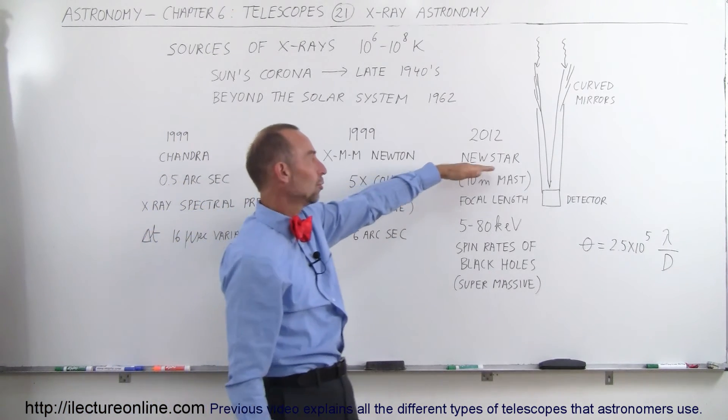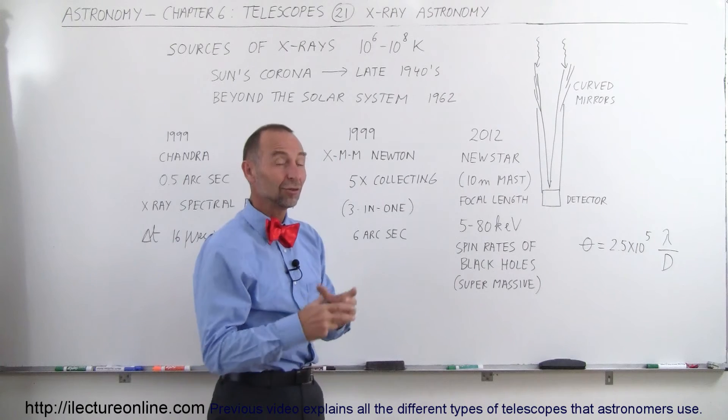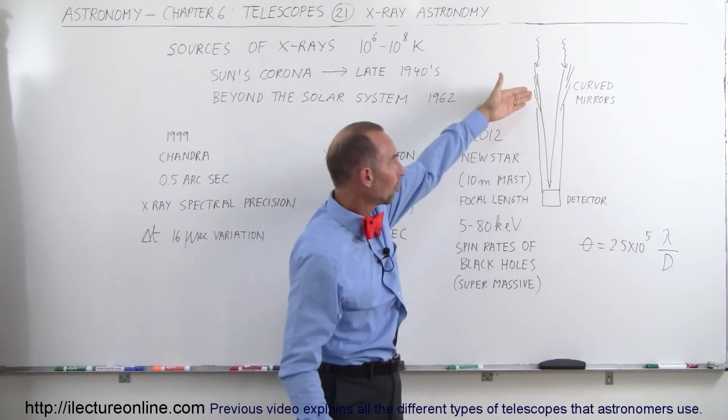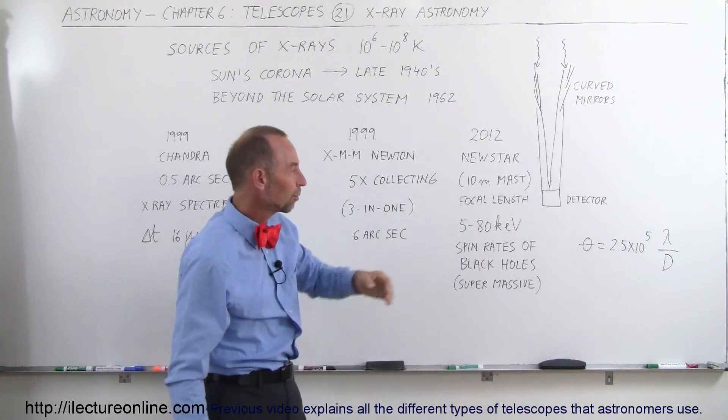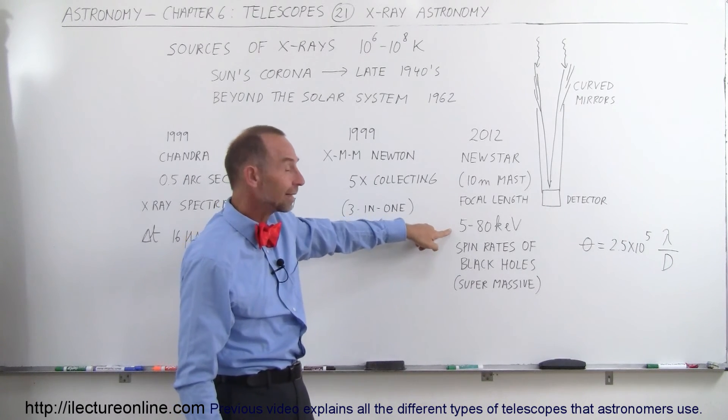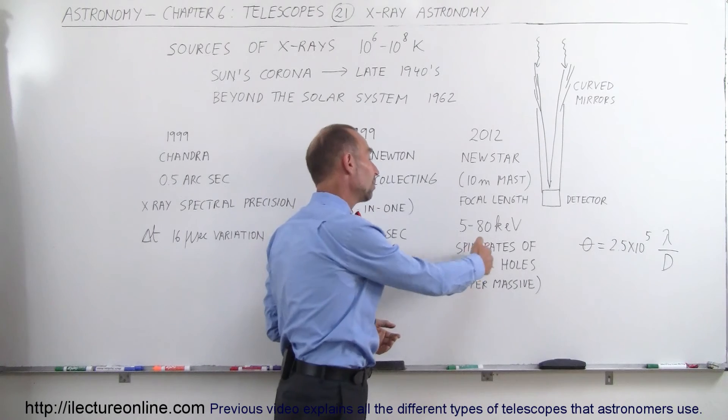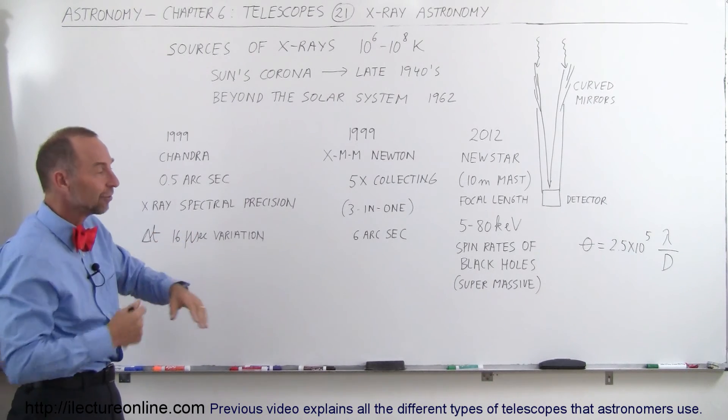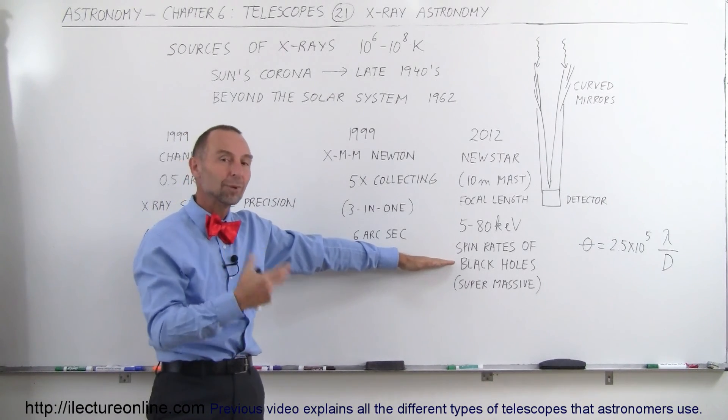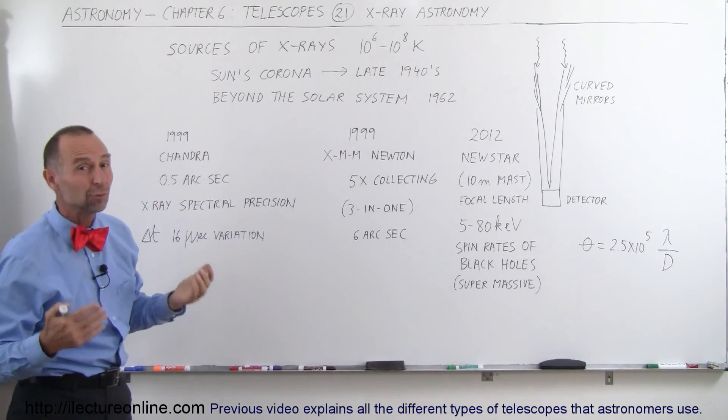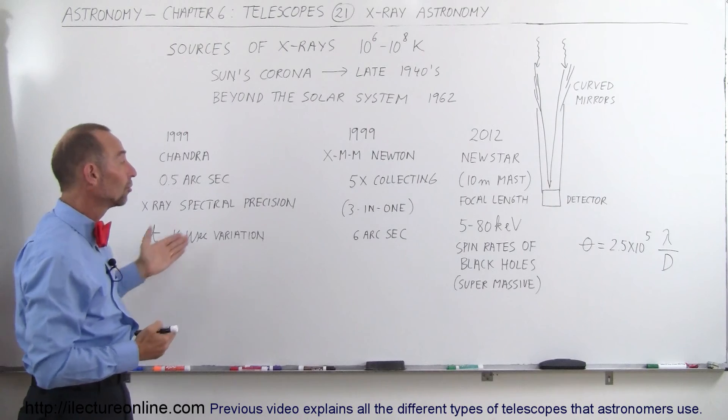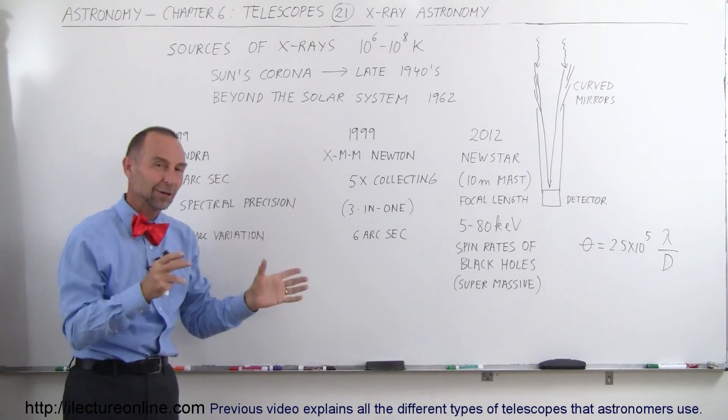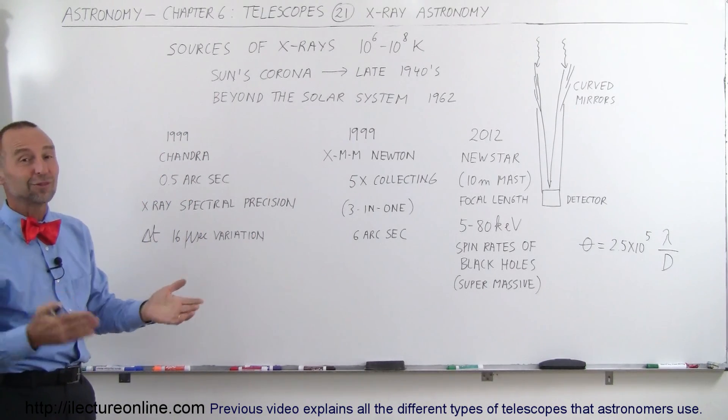And NuSTAR, one of the big advances in NuSTAR is that it came with a very long mast. So this is a space-borne telescope that had a 32-foot-long mast, a 10-meter-long mast, so that the focal length was 10 meters. That gave us enormous precision. Very high energies were being collected. And with that telescope, we're actually able to calculate the spin rates of supermassive black holes. So very close to the black hole when the dust and gas around it start spinning at very high velocities, we're able to calculate the spin rate with a telescope like this. So again, things we couldn't observe at regular optical telescopes, so we put these things in space in order to get a better expanded understanding of astronomy, observing at the various frequencies, including x-rays.